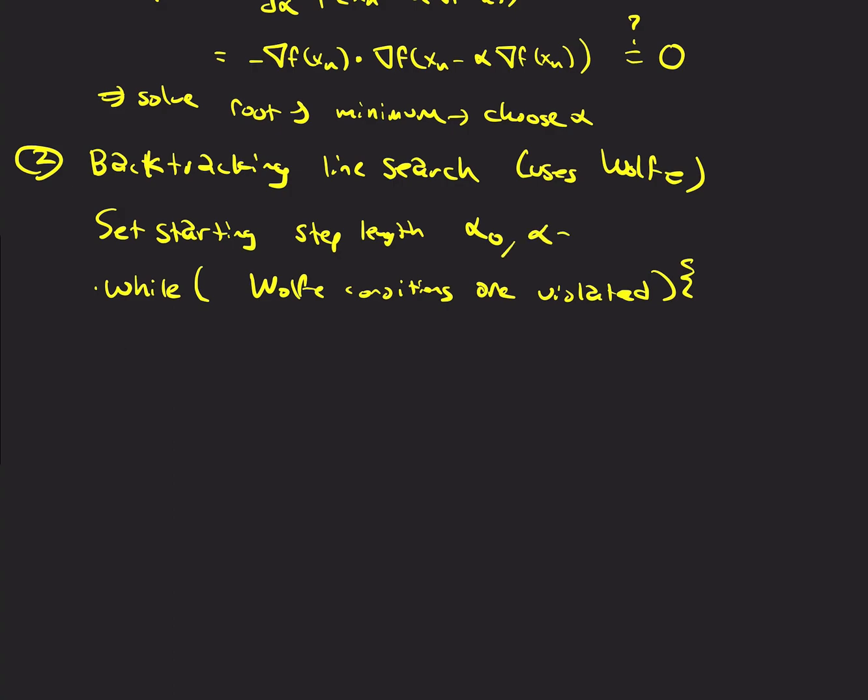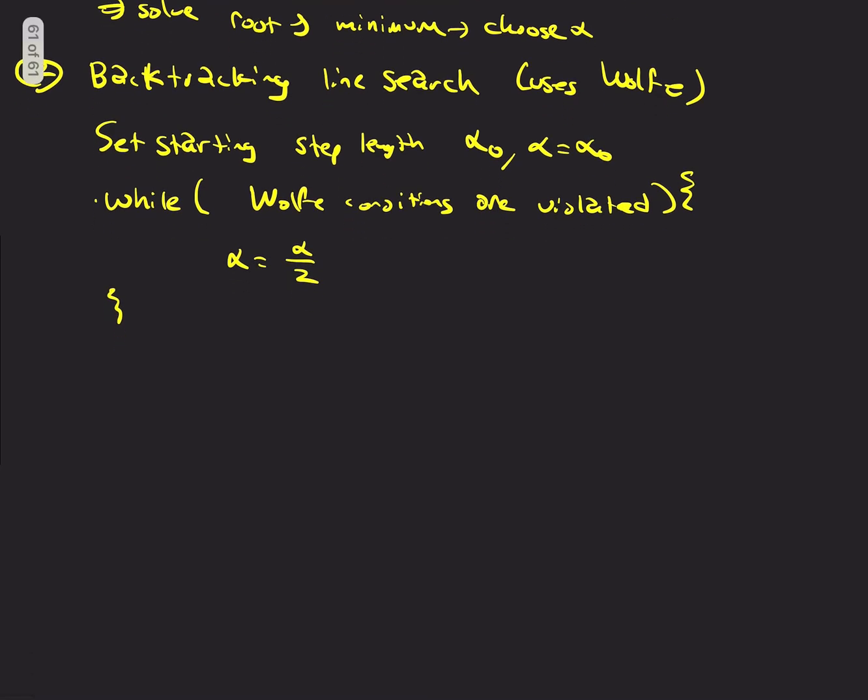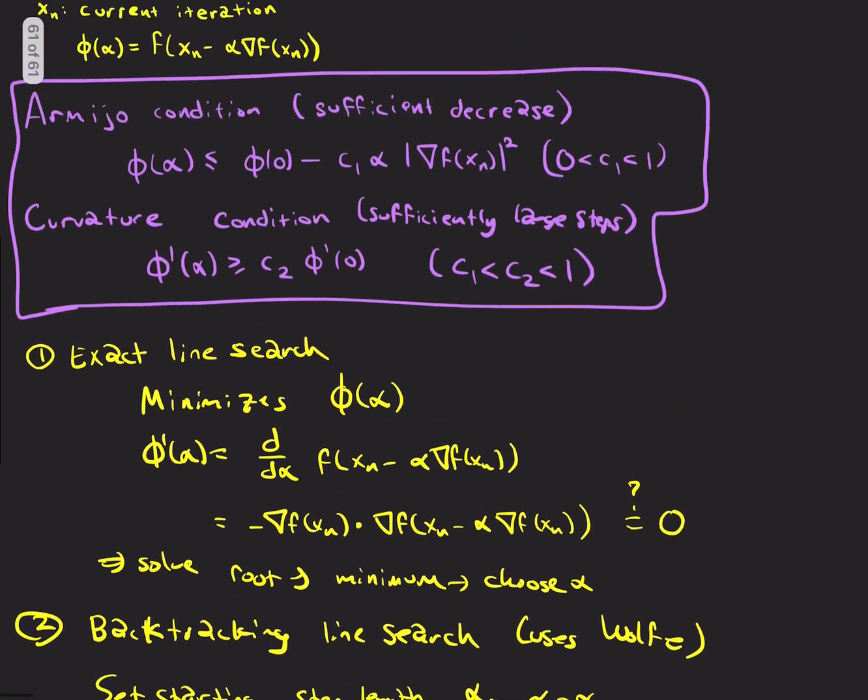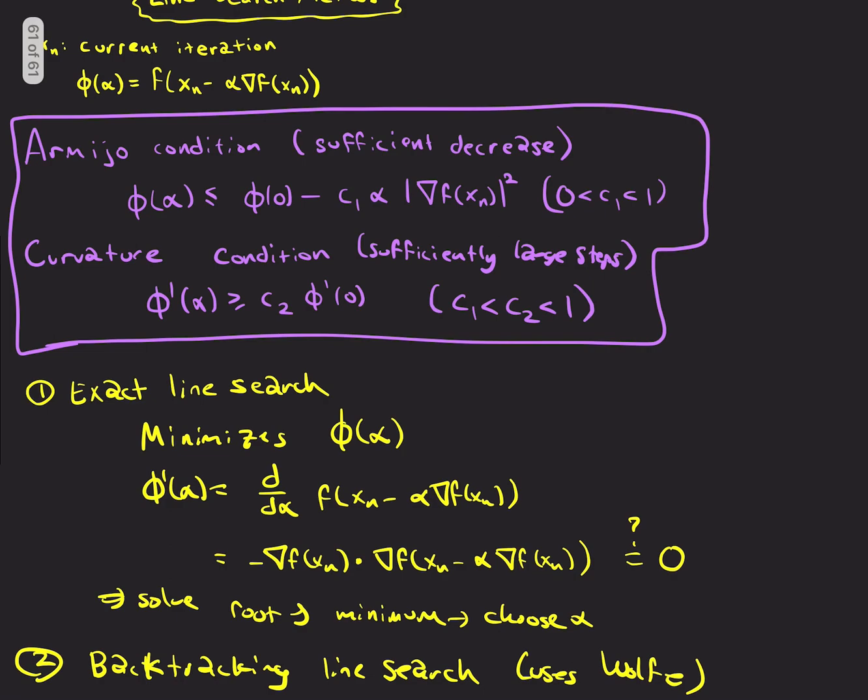And then you say, while the Wolfe conditions are violated. And you set α to α_0, say. α is α divided by two. Now, in theory, you can choose anything greater than one. But let's just do two because it'll converge super fast to something. We don't have to be super precise with it. And this is the whole point. That in the limit, as this goes to zero, you should eventually hit this asymptotic behavior.